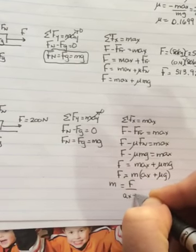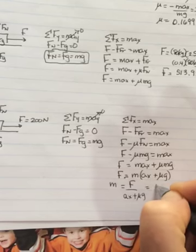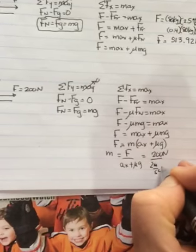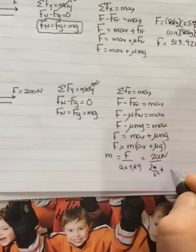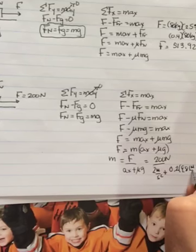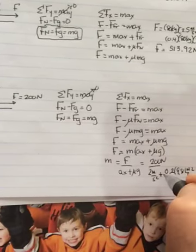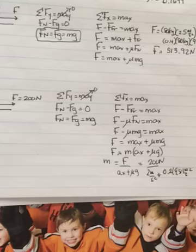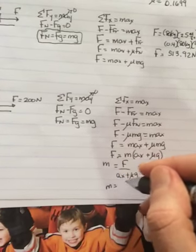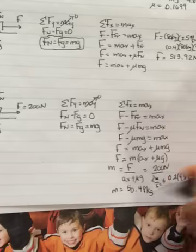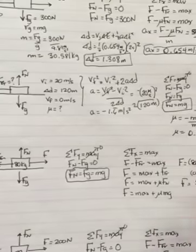So F over AX plus mu G. And now fill in our values. So F was 200 newtons. The acceleration was 2 meters per second squared. The mu was 0.2. I must have had a thing for 2s in this question. Times 9.81 meters per second squared. So it's going to be 200 newtons over 0.2, and you get an M of 50.48, or something very close to that, kilograms. So there are the first four, which were the homework over the weekend.